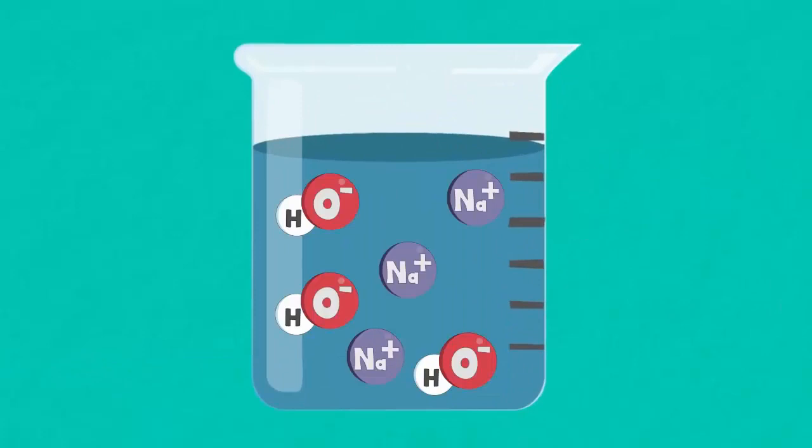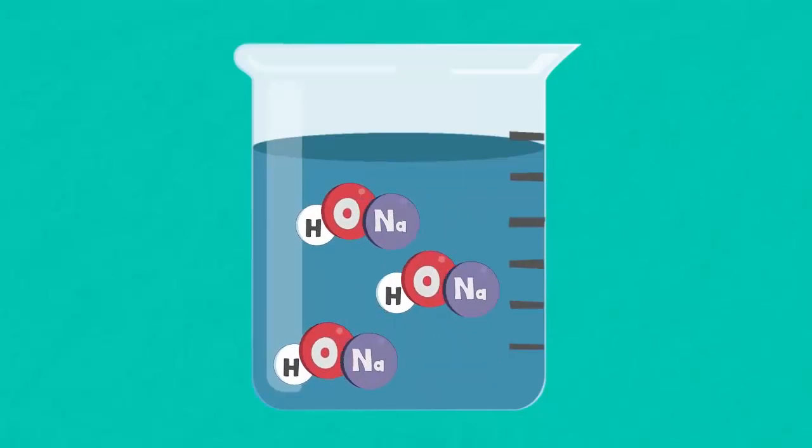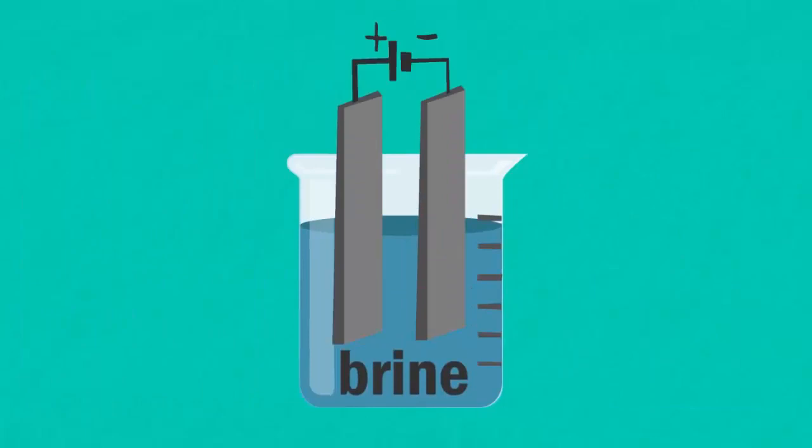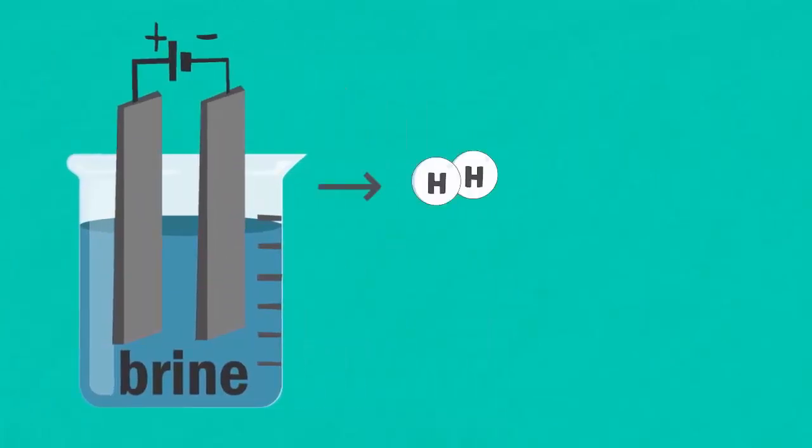The ions left in the solution are the positive sodium ions and the negative hydroxide ions, which combine to form sodium hydroxide. Overall, the electrolysis of brine has produced hydrogen, chlorine and sodium hydroxide.